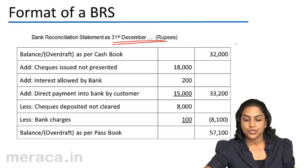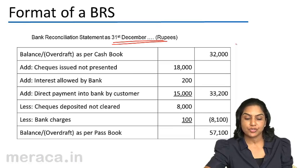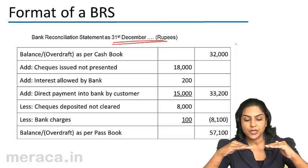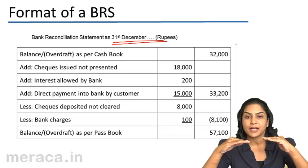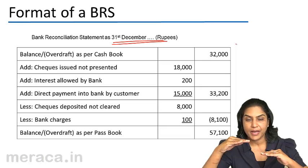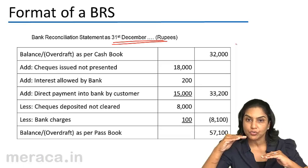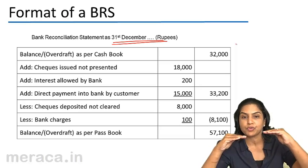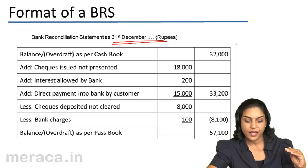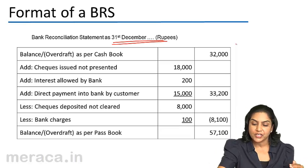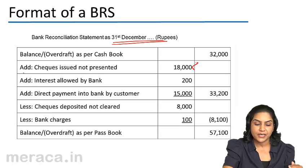At cheques issued but not presented — when the cheque is issued, the cashbook balance comes down. The passbook balance remains here. We have started with the balance as per cashbook in order to reach the balance as per passbook. Therefore, we have added cheques issued but not presented.